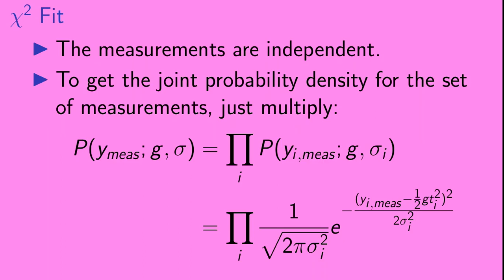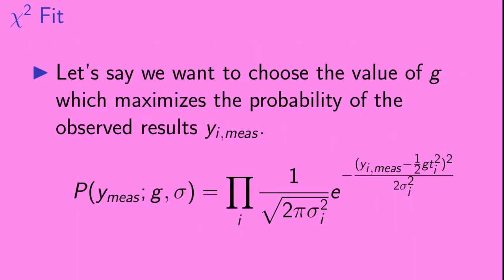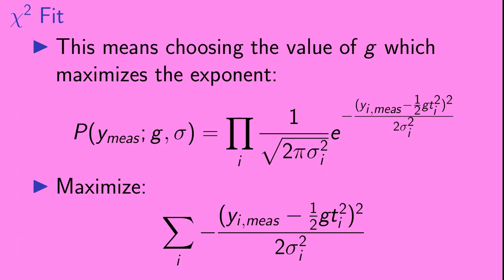Okay, so we have several measurements of y at different times. The measurements are independent. This means to get the joint probability density for the whole set of measurements, we just multiply the probability densities for the individual measurements together. That product is shown here by the large pi symbol. Okay, so let's say we want to choose the value of g which maximizes the probability of the set of observed results. This means choosing the value of g which maximizes what we have in the exponent. Remember that the product of a bunch of exponentials is the exponential of the sum of their arguments. So this means we want to choose the value of g which maximizes this sum shown at the bottom of the page.